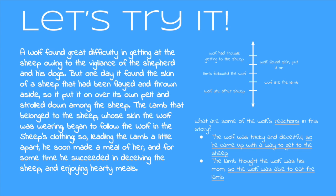For example, what if the wolf wasn't very tricky or very deceitful? Would he have eaten any of the lamb? I don't think so. We can also think about how maybe the lamb wasn't tricked by the sheepskin the wolf was wearing — the lamb didn't think the wolf was his mom. Would the wolf have been able to eat him? Probably not. These reactions directly contribute to the sequence of events; they're the reason why the events happen the way they do.